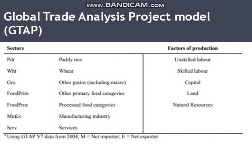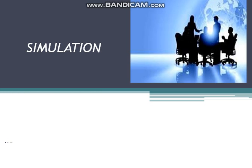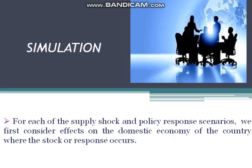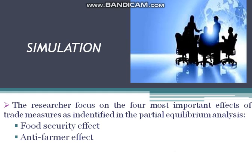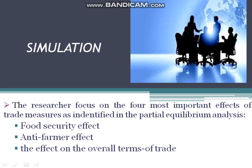It is also aggregated into seven categories, distinguishing the most important types of grains — rice, wheat, and other grains — and five factors of production. Four different scenarios were made to examine the impact of rising wheat prices under protectionist and free trade policy responses. For each supply shock and policy response scenario, the researchers consider effects on the domestic economy. The researchers focus on four most important effects of trade measures: first, the food security effect; second, the anti-farmer effect; third, the effect on the overall terms of trade; and fourth, the effect on overall trade revenues.